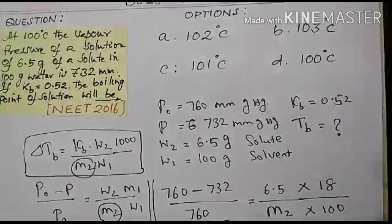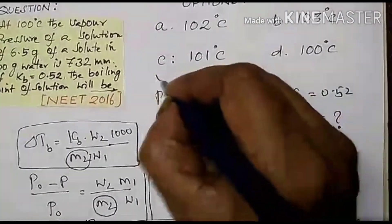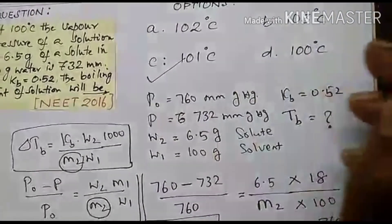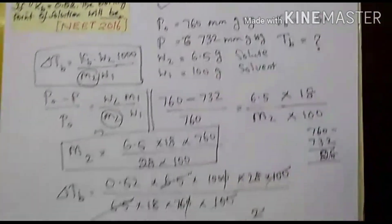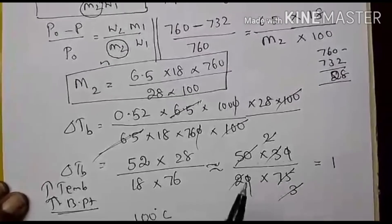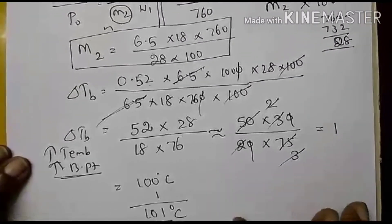What you are getting is 101 degree. They are asking the boiling point of the solution will be. So now you can see 101 degree is this. Even though you are having 1 out of 1, 2, 3 nearing, we are able to get the correct answer. So now this is the way you have to practice the question.